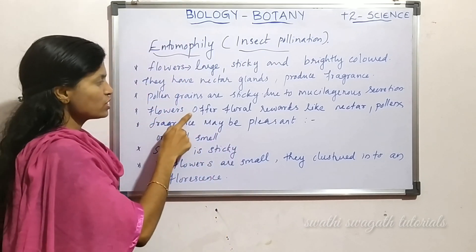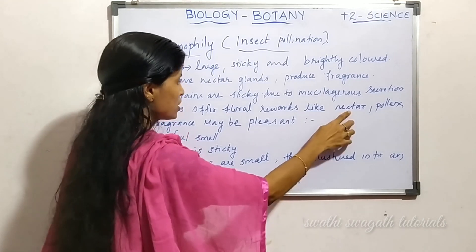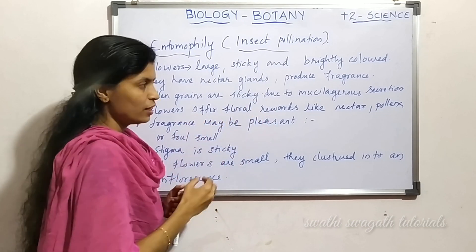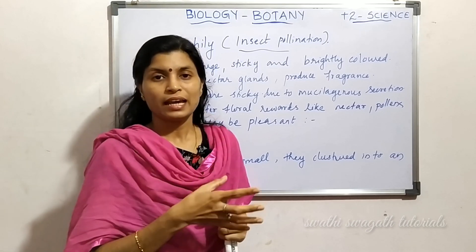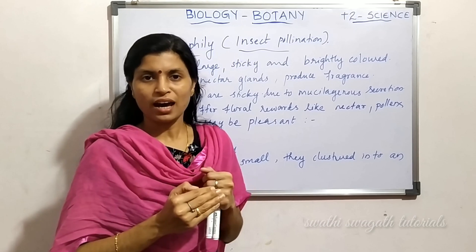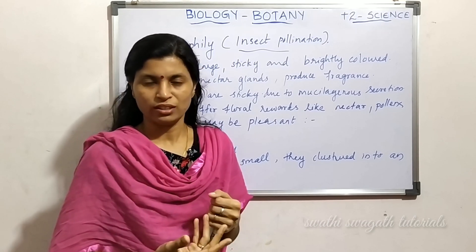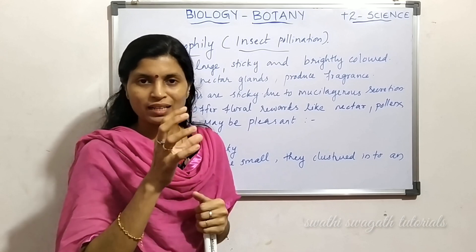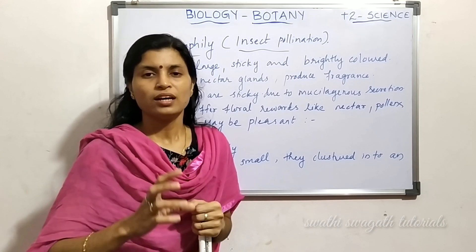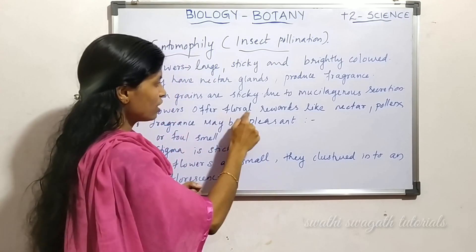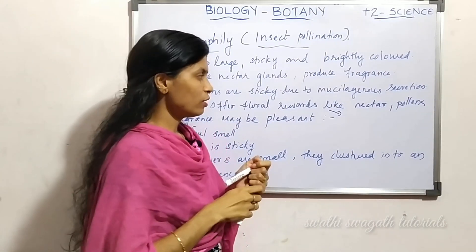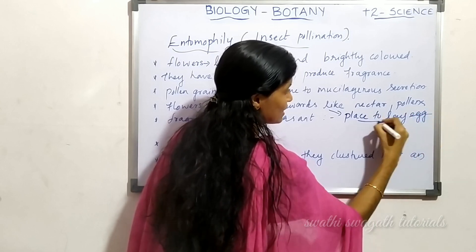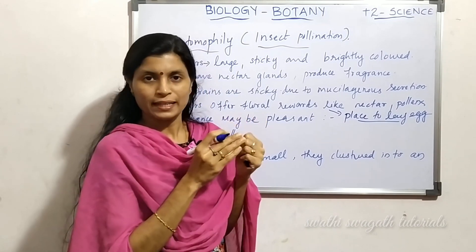Flowers offer floral rewards like nectar and pollen to pollinating agents, mainly insects. Insects visit the flower because it offers food and shelter. The reward is in the form of food or a safe place to lay eggs. Insects use the flower as a safe place for laying eggs.